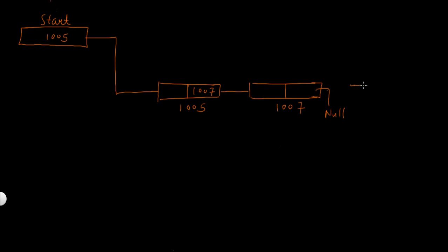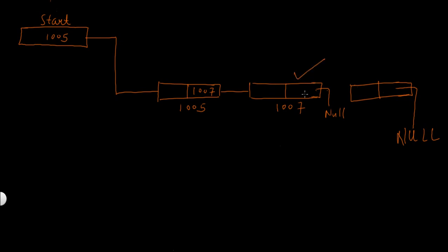When a node is added at the end of a linked list, that node becomes the last node in the list and two things need to be done. First, the link part of this new node needs to be null because the link part of the last node should always be null. Second, the second-to-last node's link part should now store the address of this new node — suppose the address is 1009 — so a node has been added at the end of the list.